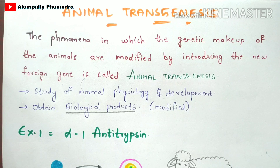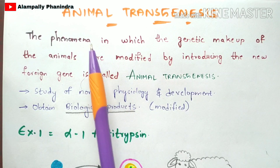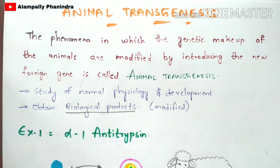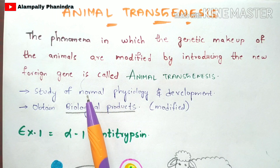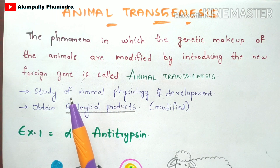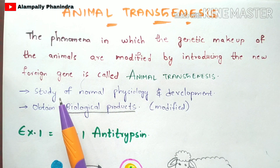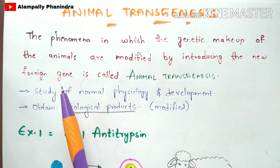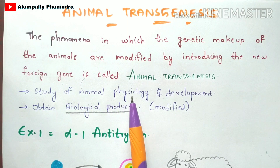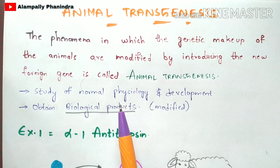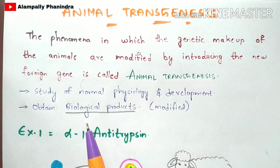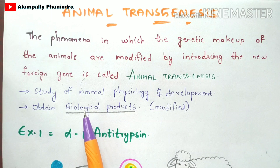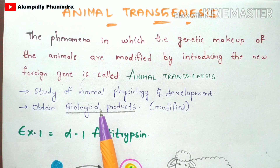This process is called animal transgenesis, and the definition will be explained in detail with examples later. Transgenic animals are used for the study of normal physiology as well as development. This animal transgenesis process is mainly done to obtain biological products, which are modified through this process.